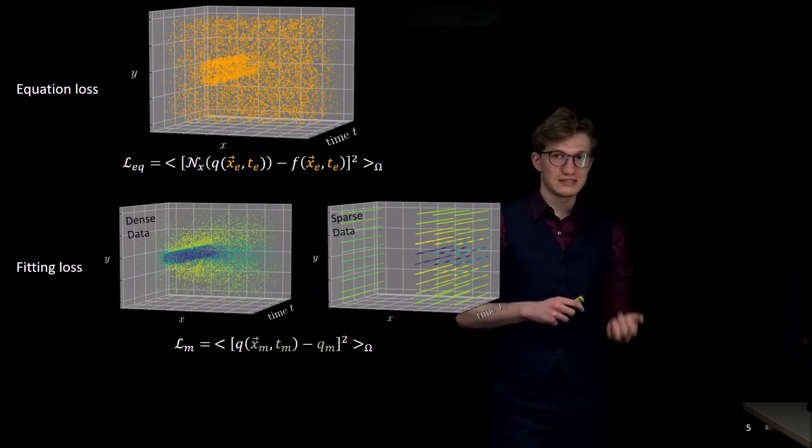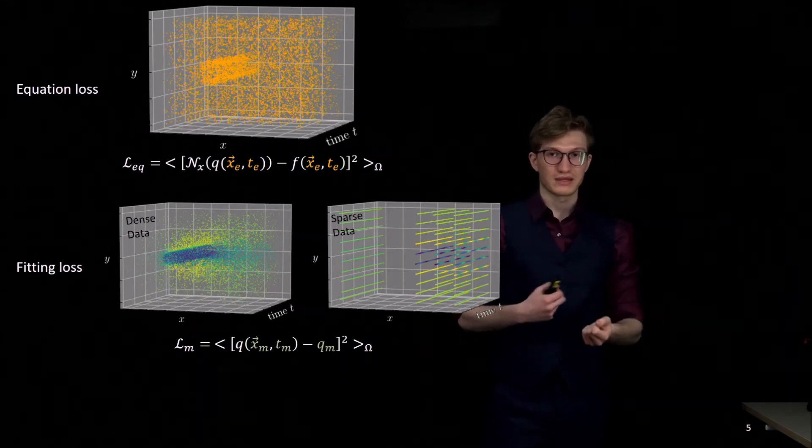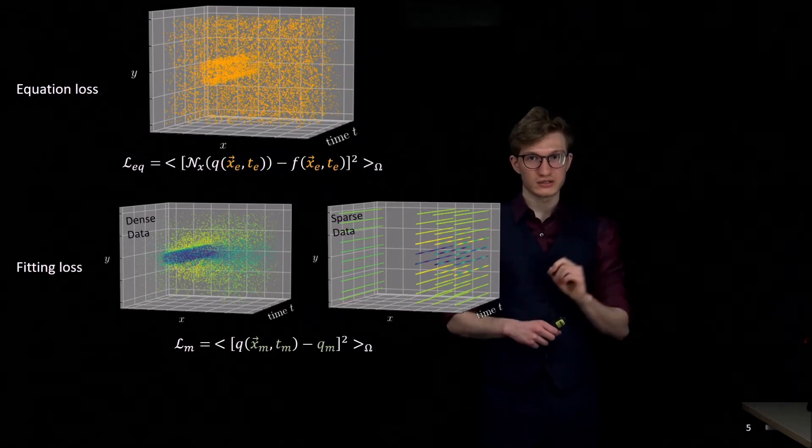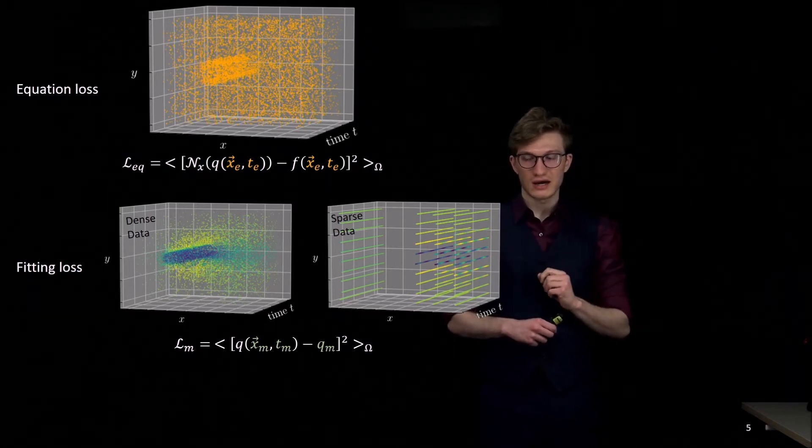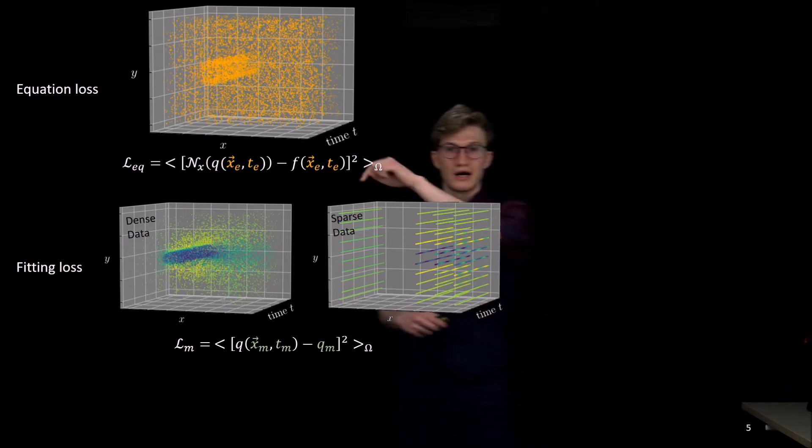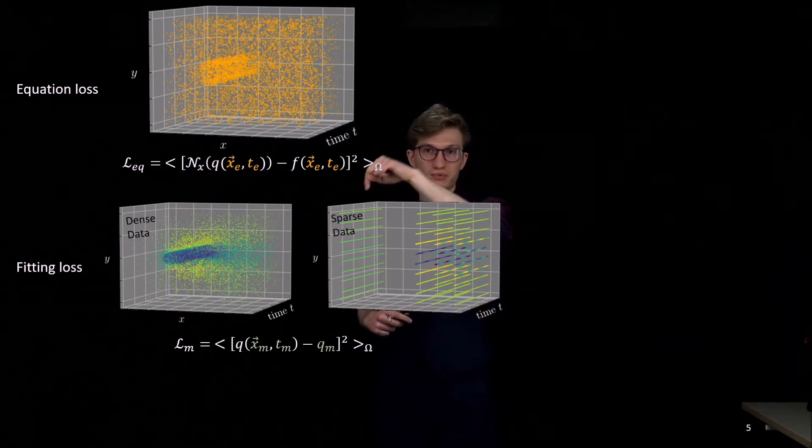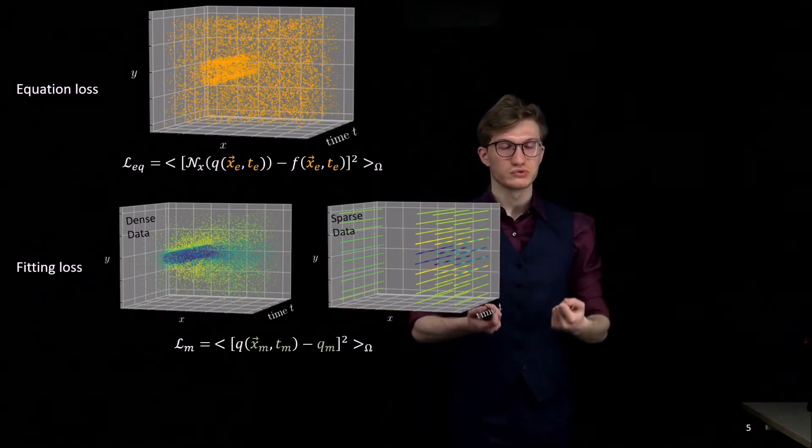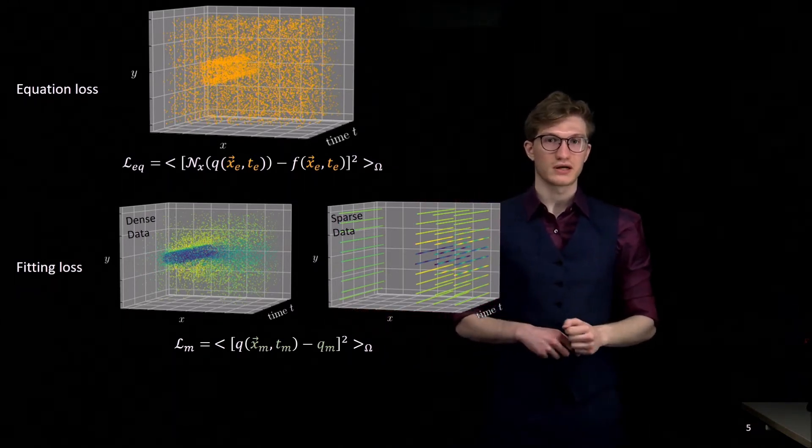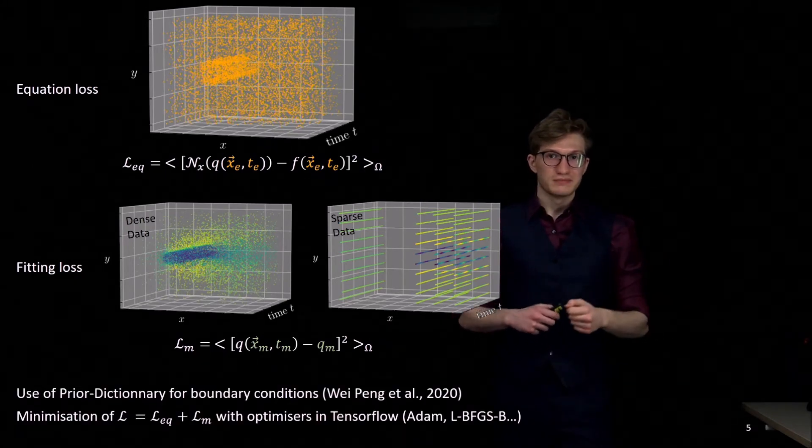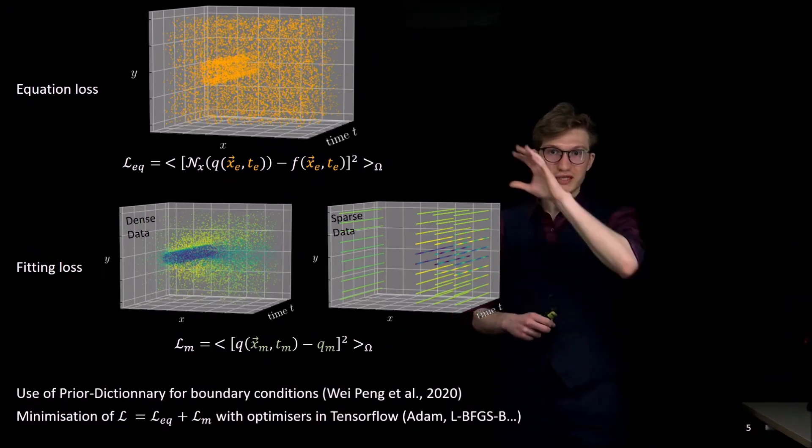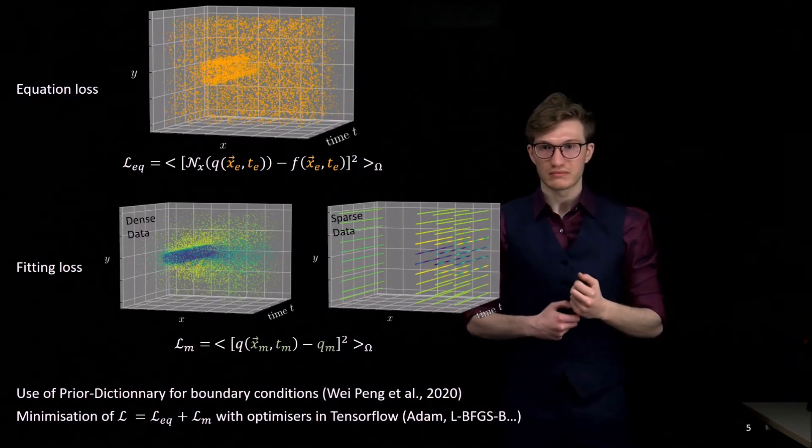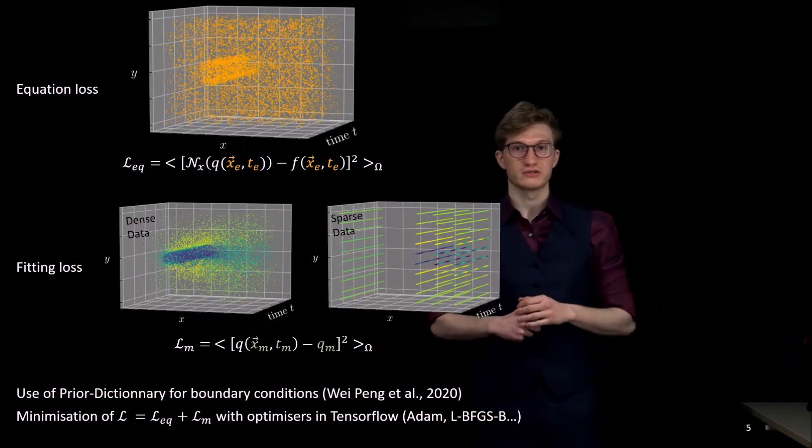In some cases, the data is more sparse. Here you get an example which represents time signal measurements at several locations. Sometimes these locations are spaced a lot between them. If you look at this point, this array of points and this array of points, you get a large empty zone between them and it's more complicated to interpolate in that zone using the physical regularization. We did the optimization of these neural networks using optimizers from TensorFlow, and we also use prior dictionary to enforce the boundary conditions.